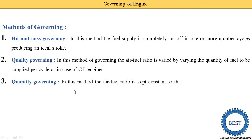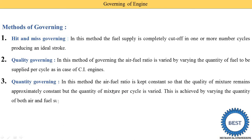Next is quantity governing. In this method, the air-fuel ratio is kept constant so that the quality of the mixture remains approximately constant, but the quantity of mixture per cycle is varied. For example, at a certain speed we supply 0.5 cubic meters per minute of air-fuel mixture, and when speed increases we supply only 0.2 cubic meters per minute. The proportion of air and fuel is the same - we just change the quantity of the mixture. This is achieved by varying the quantity of both air and fuel supplied to the engine, as in the case of an SI engine or petrol engine.